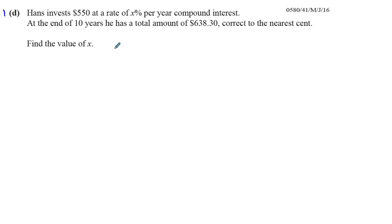Hans invests $550 at a rate of X percent per year compound interest. At the end of 10 years, he has a total of $638.30, correct to the nearest cent. Find the value of X.